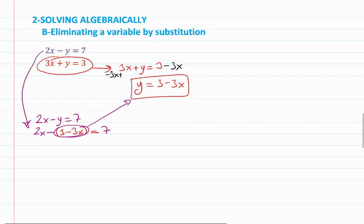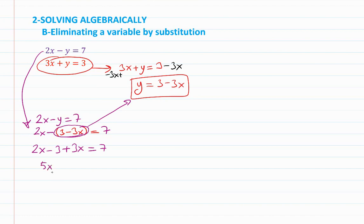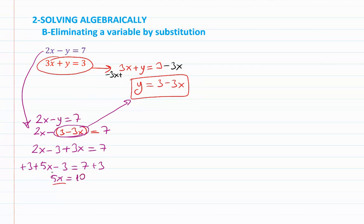So 2x minus 3 plus 3x equals 7, giving 5x minus 3 equals 7. Adding 3 to both sides: 5x equals 10. Dividing by 5, x equals 2.